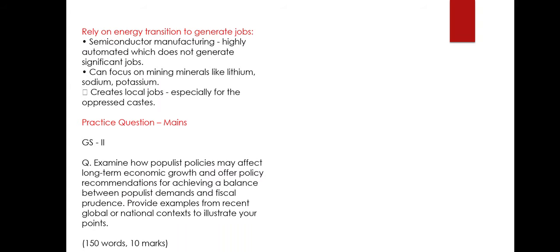The second point is the energy transition — the world is moving from fossil fuels to electrical energy. India is currently focused on semiconductor manufacturing; for example, a new project was announced with Micron, with the government providing 70% of the project cost. However, semiconductor manufacturing is highly automated and will not generate a high number of jobs. Instead, the government must also focus on mining of materials used in semiconductor industries like lithium, sodium, and potassium. Currently, only 5% of India's vast resources have been mined.